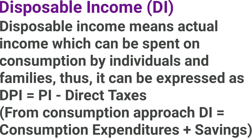Disposable income means actual income which can be spent on consumption by individuals and families. It can be expressed as DPI equals PI minus direct taxes. From the consumption approach, DPI equals consumption expenditures plus savings.